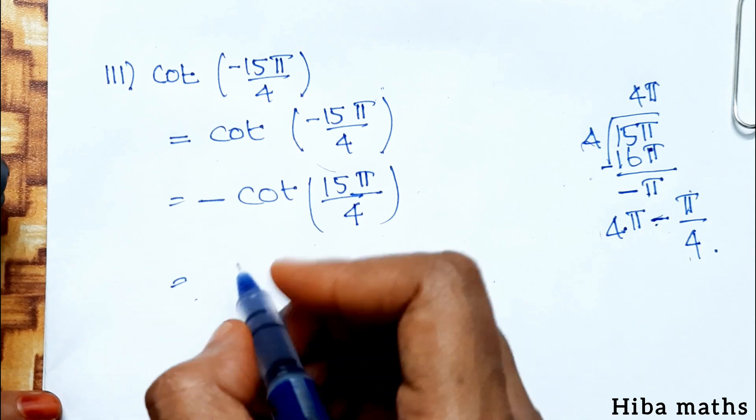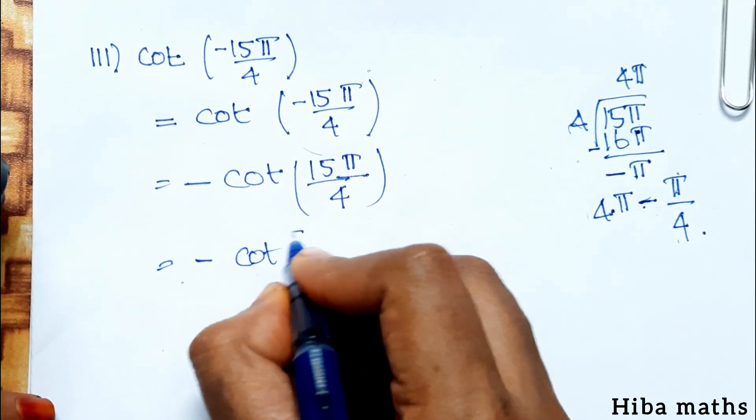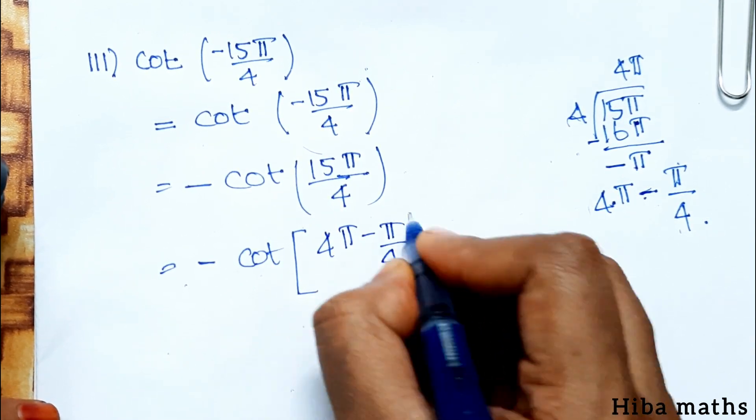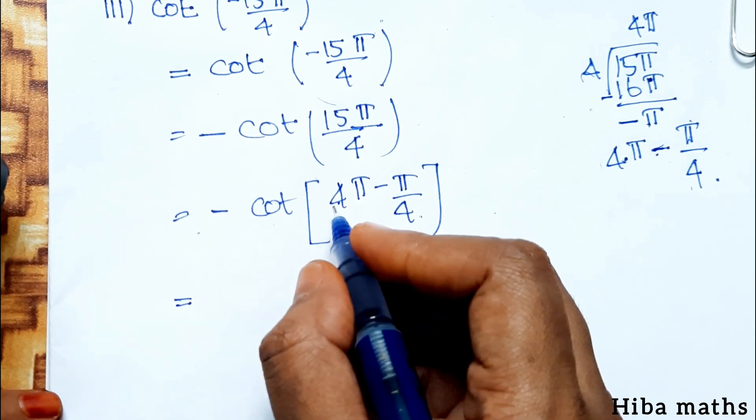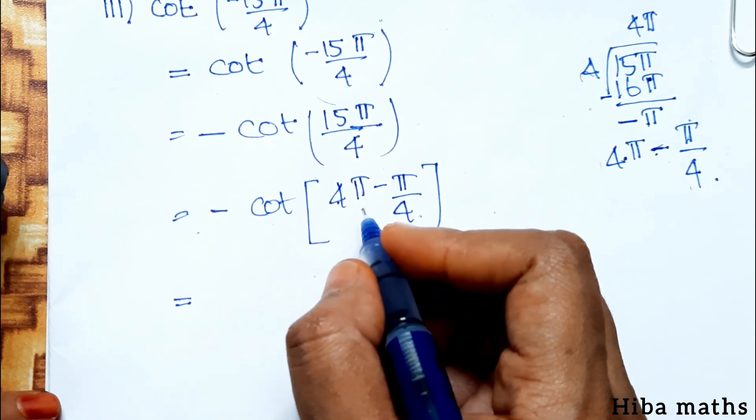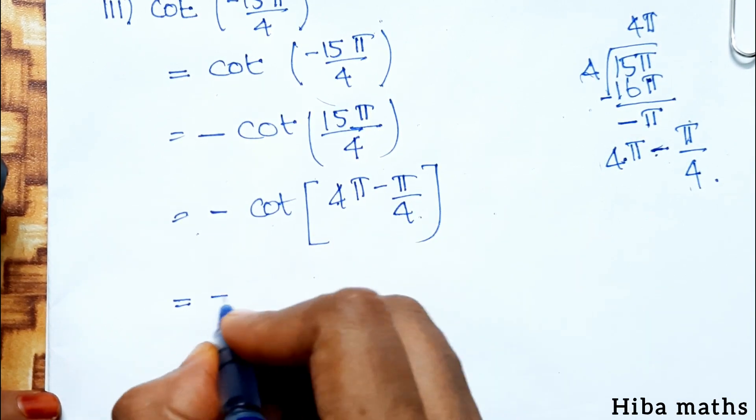So we get minus cot of 4 pi minus pi by 4. Since 4 pi equals two complete circles of 2 pi each, the 360s cancel.